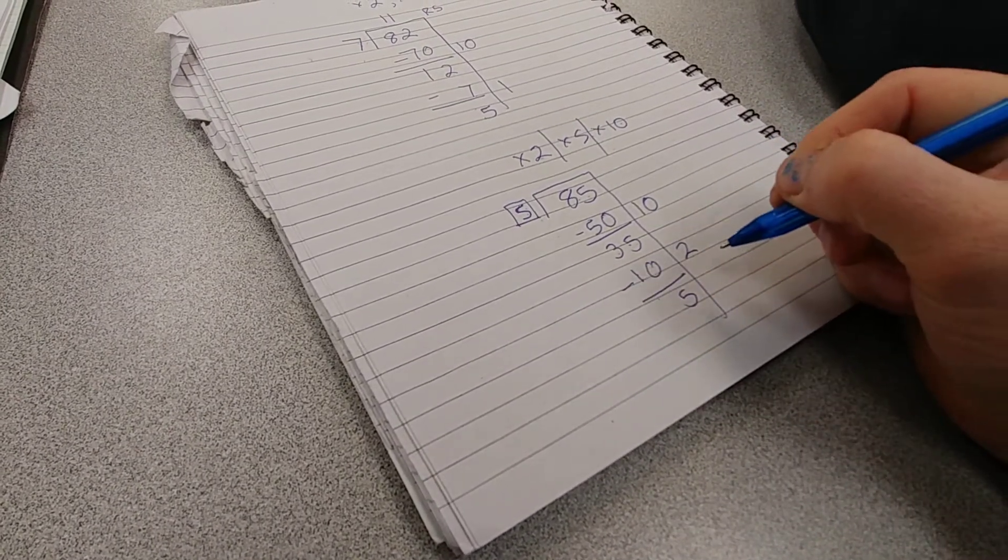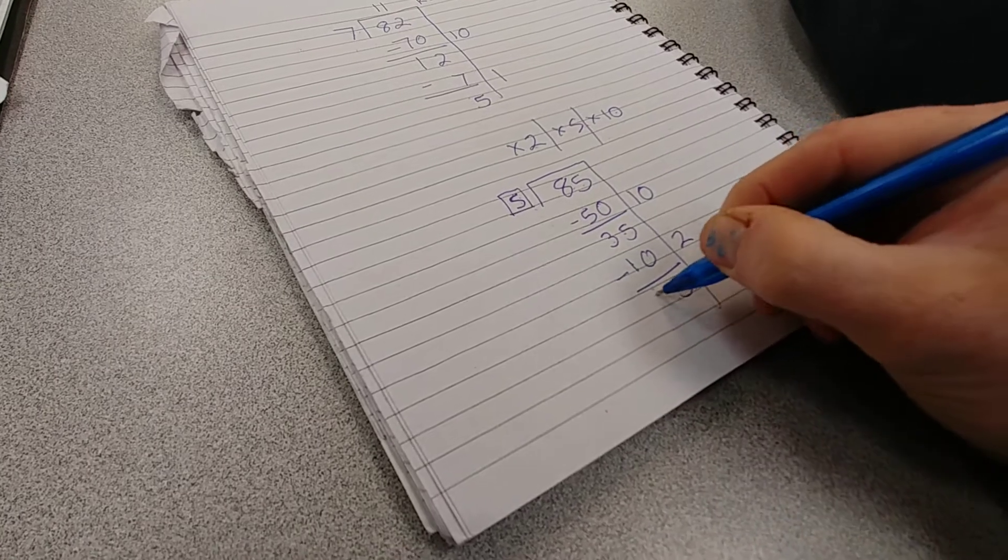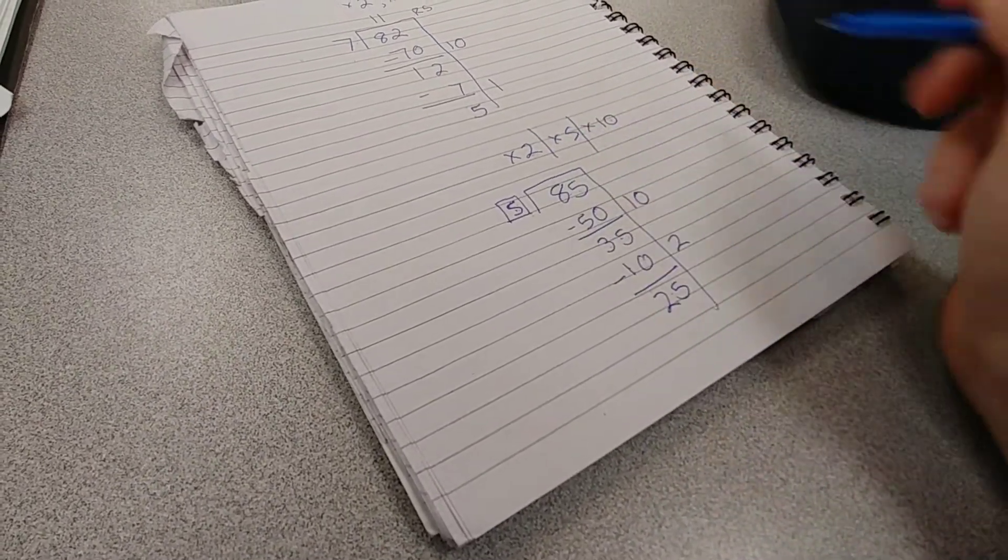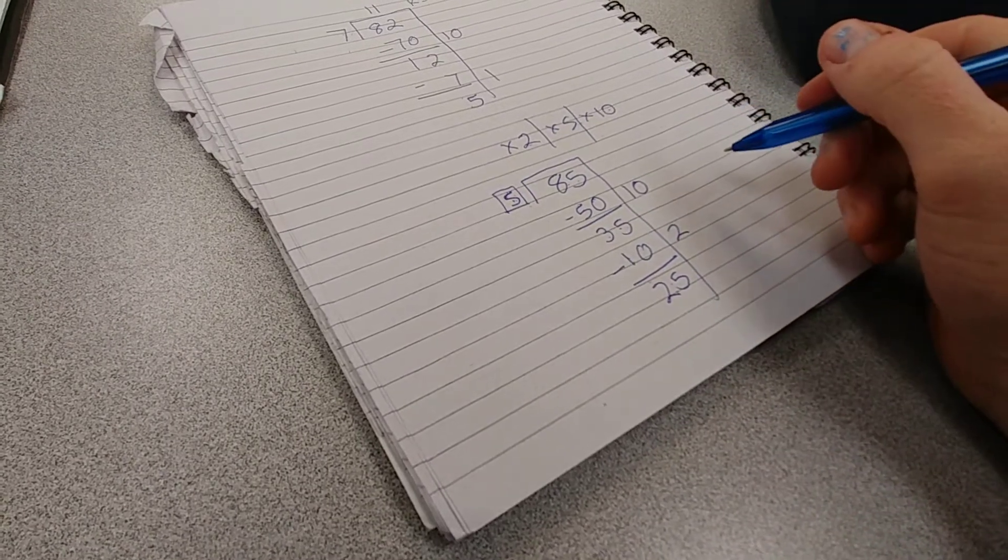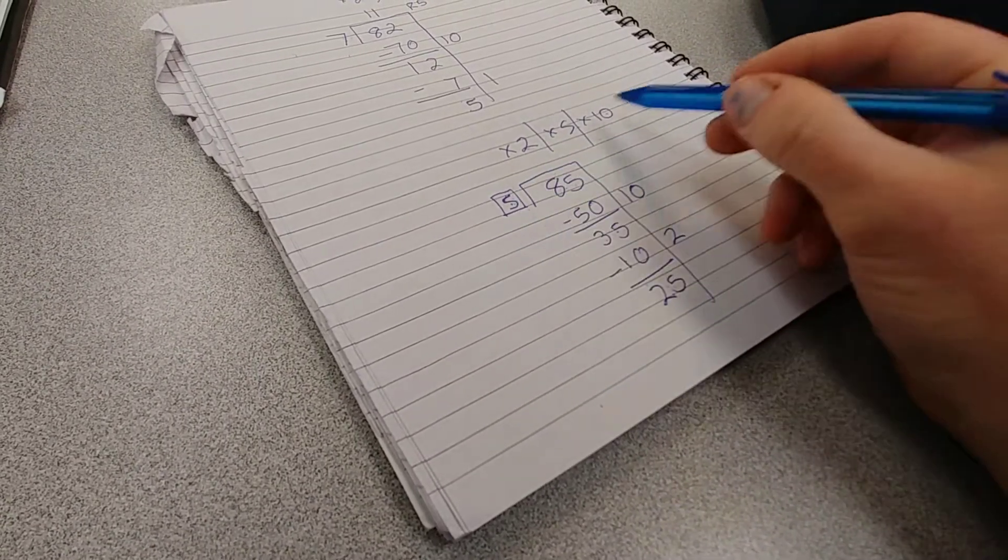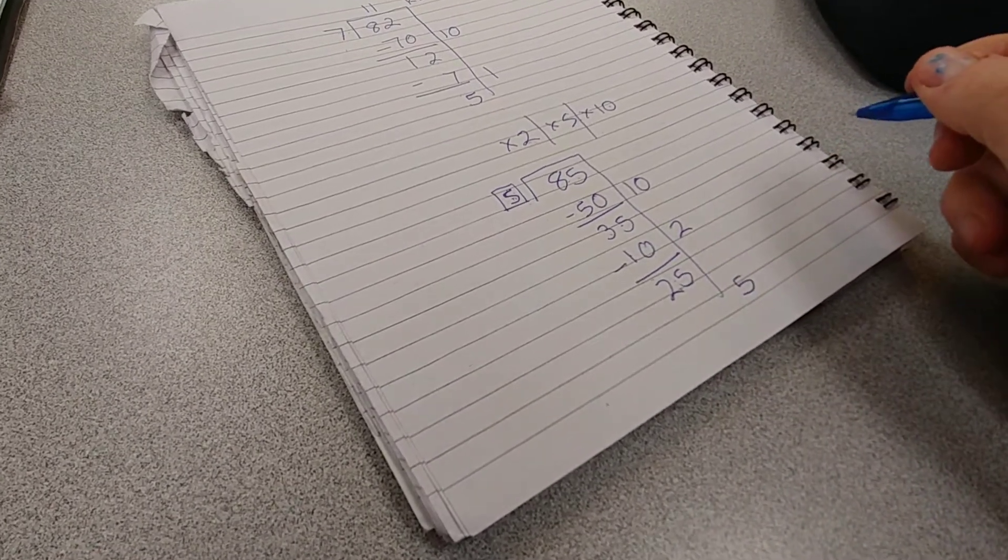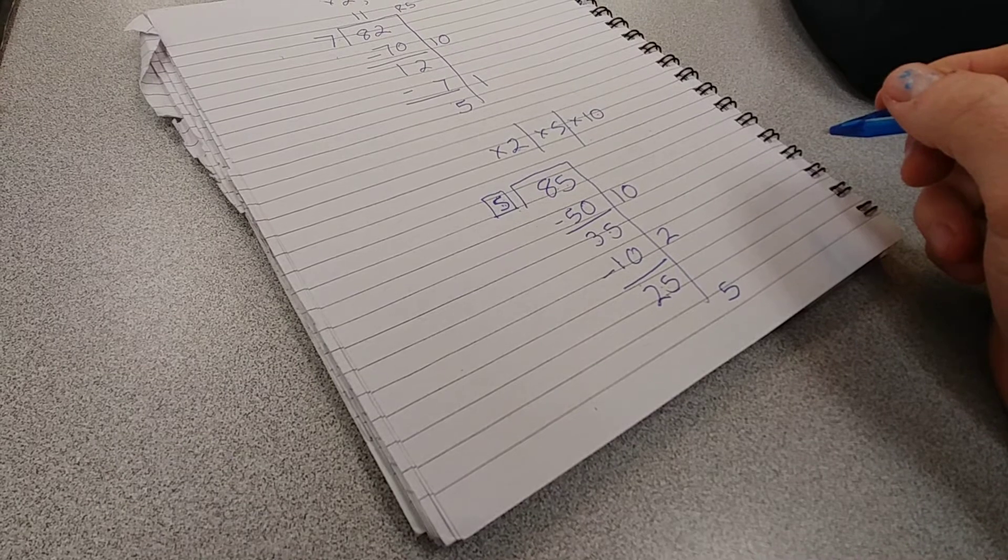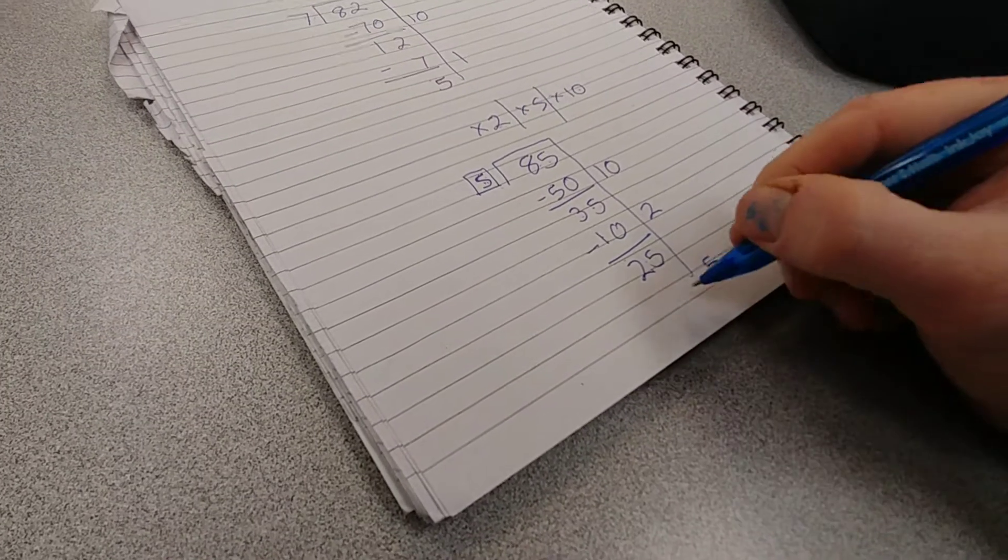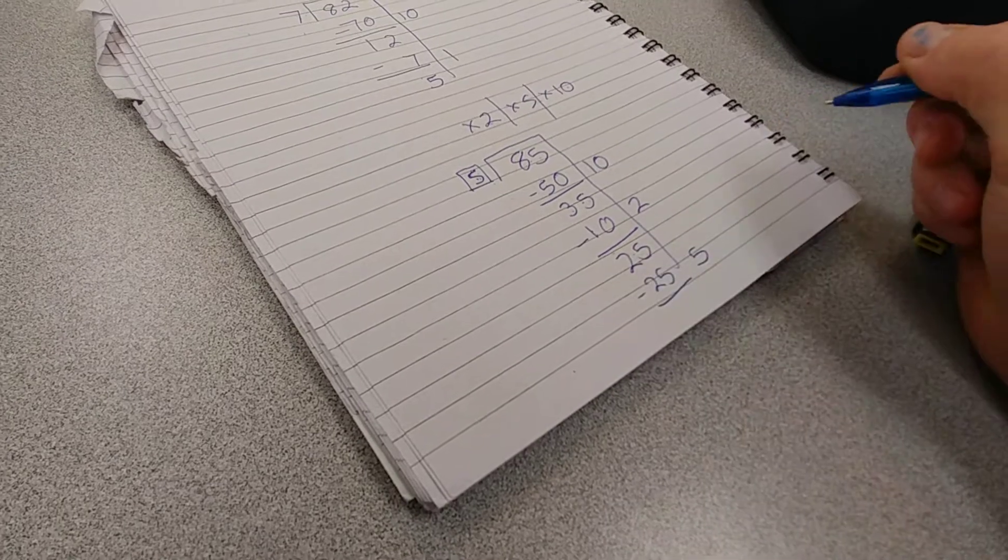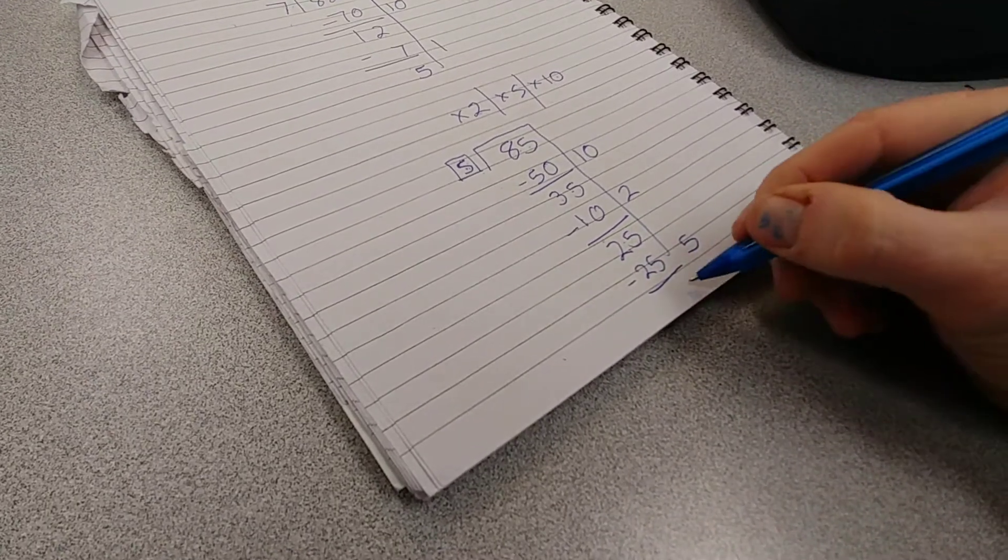Ten? Oh man, five times ten is fifty, that's too big. Five. What's five times five? Twenty-five. Oh, look at that. What's twenty-five minus twenty-five? Boom.